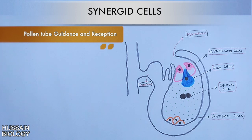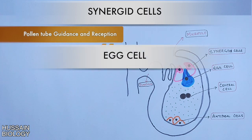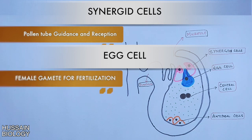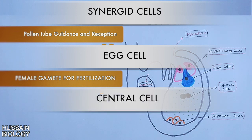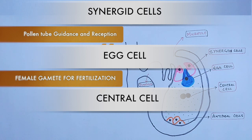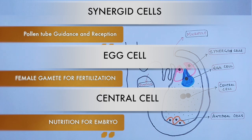Secondly, we have the egg cell, which is the female gamete in plants from which the zygote forms. From the zygote there will be an embryo, and finally we will get the seed. The third important cell in the ovule is the central cell, which has two polar nuclei. Upon fertilization with one of the two sperm cells from pollen, it forms triploid endosperm to nourish embryo development.